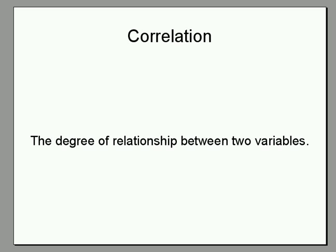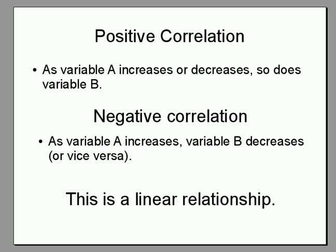Correlation describes the degree of relationship between two variables — let's call them A and B. A positive correlation means that when variable A increases, so does variable B, and if variable A decreases, so does variable B. A negative correlation means that as one variable increases, the other decreases.